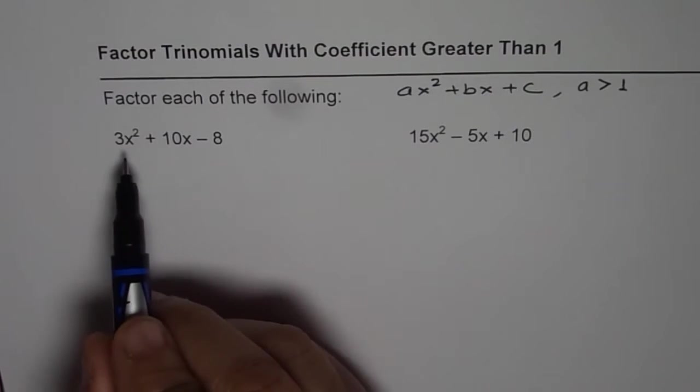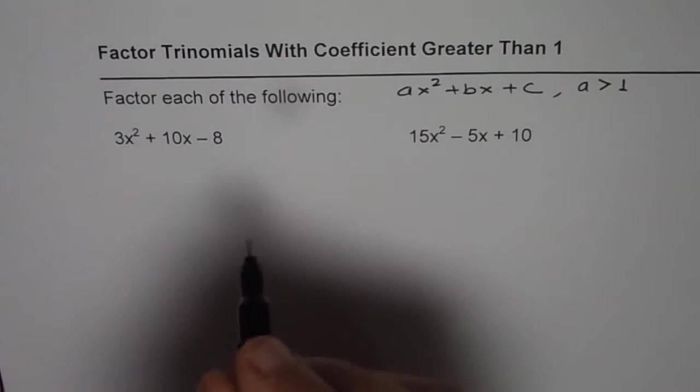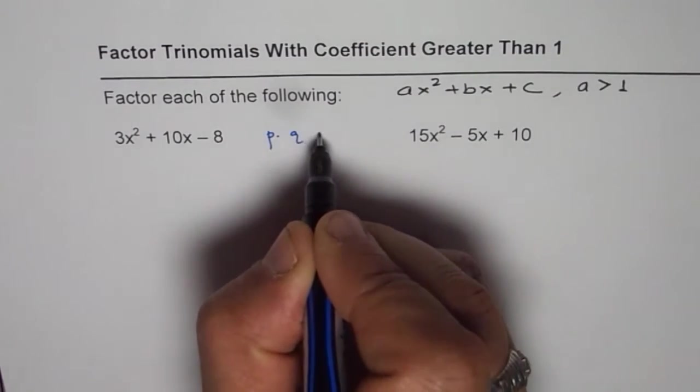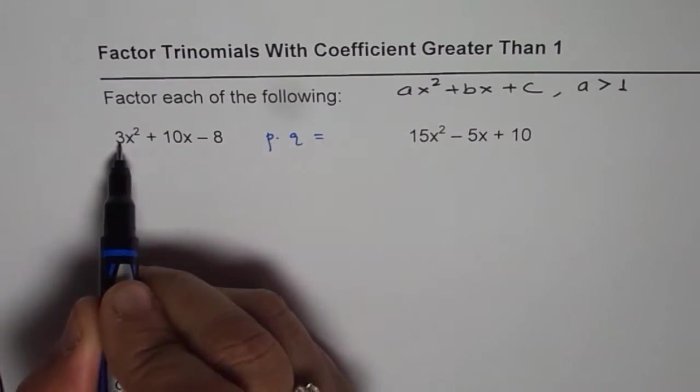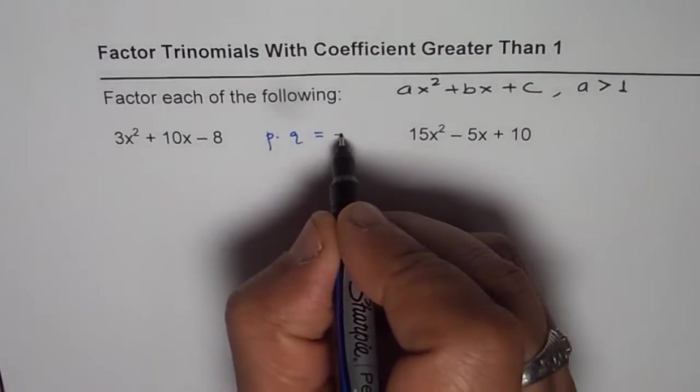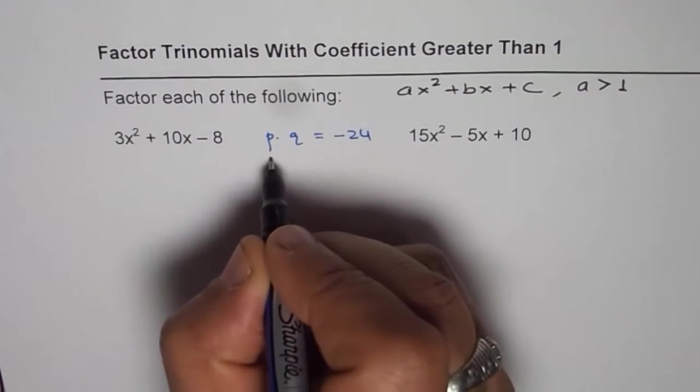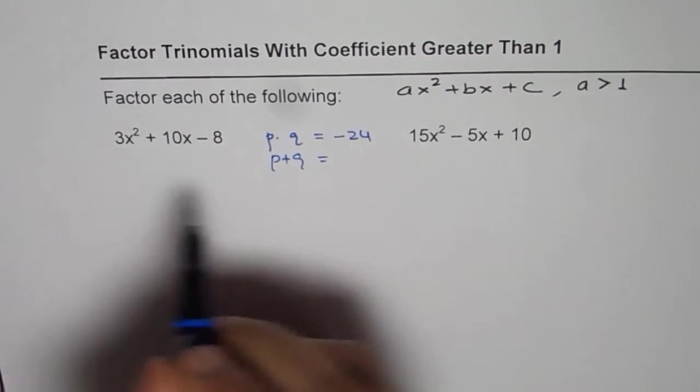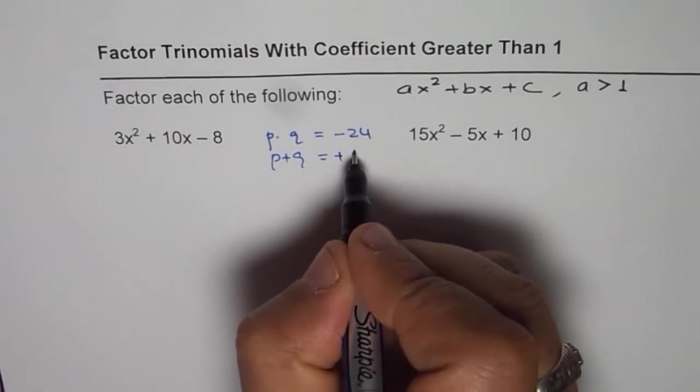Let us begin by finding product and sum. So we are looking for two numbers P and Q whose product should be 3 times -8 which is -24. And when you add them, what are we looking for? We are looking for +10.